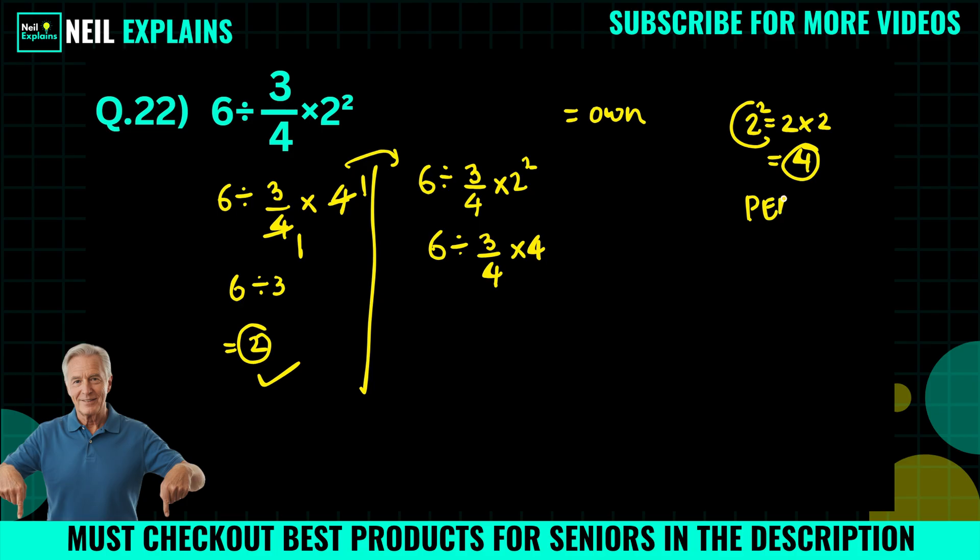So we will follow here PEMDAS, and this is exponent, multiplication, division, addition, subtraction. Because there are two operations, division and multiplication, both have the same priority, and in that case we have to solve left to right.